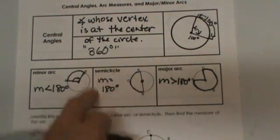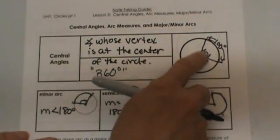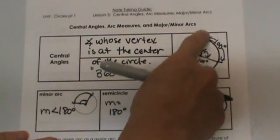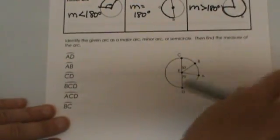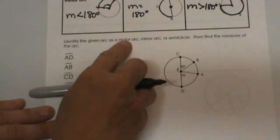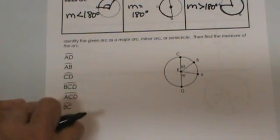It is all in relation to 180 degrees, and the central angle where the vertex is at the center will have the same measure as the arc associated with that. So let's go down and apply that to this next section. Identify the given arc as major, minor, or semicircle. Then find the measure of each arc.